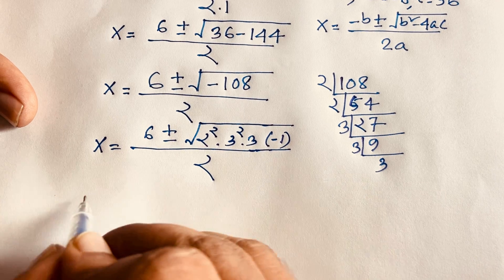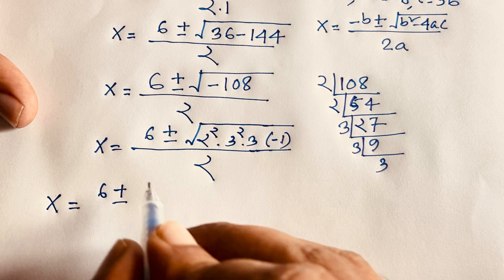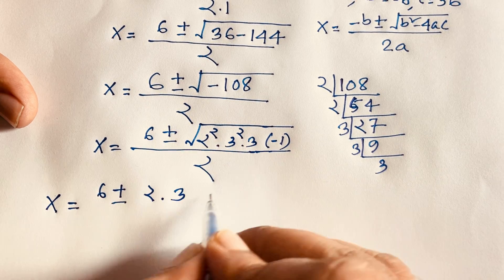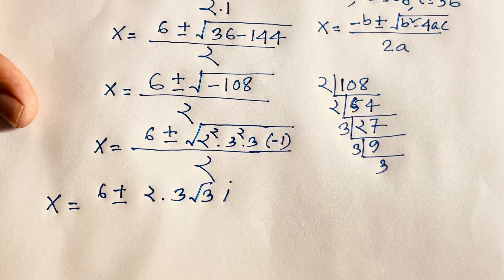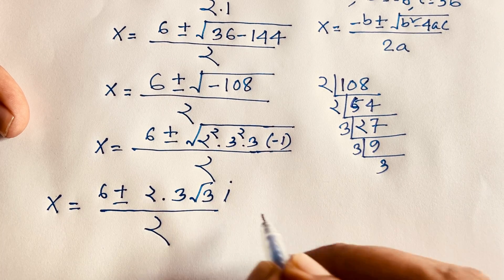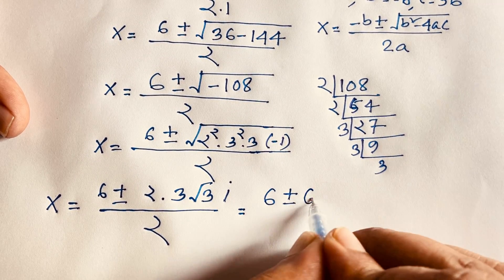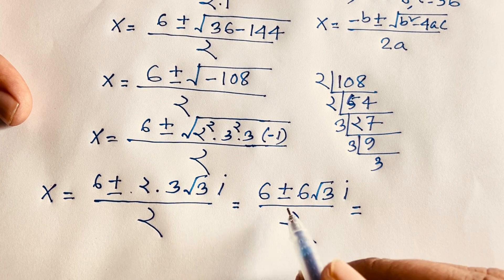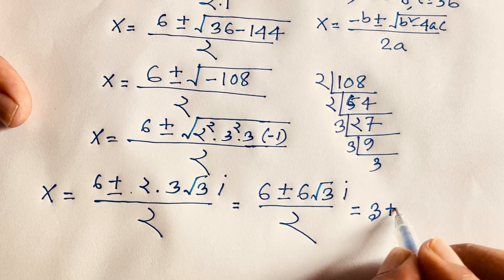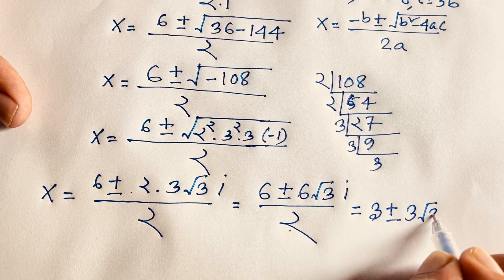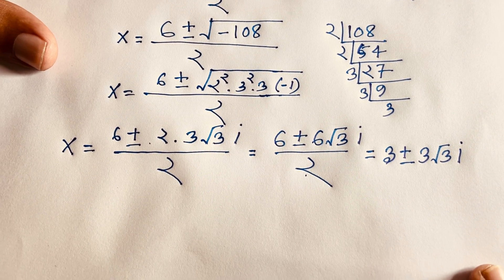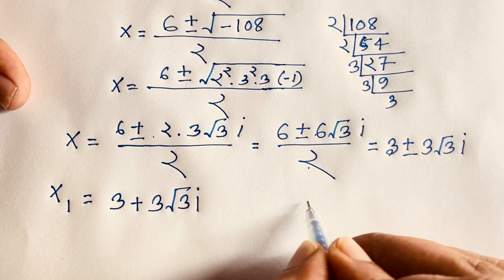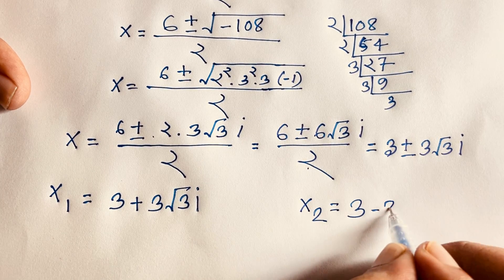Then this equation becomes x equals 6 plus or minus 2 times 3 times square root 3 times i, over 2. Dividing by 2, we find two values: x1 is equal to 3 plus 3 times square root 3 times i, and x2 is equal to 3 minus 3 times square root 3 times i.